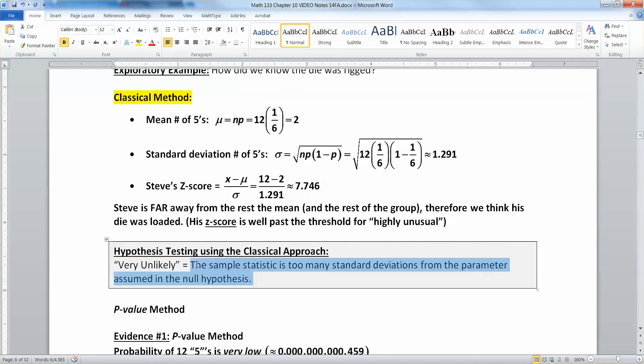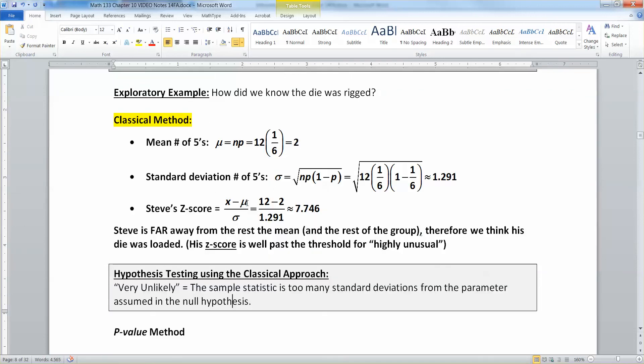Highly unusual, highly unlikely means that the sample statistic is too many standard deviations from the parameter assumed in the null hypothesis. In other words, Steve's statistic of 12 was too far away from the mean of 2 to happen by chance because his Z-score was 7.746, and that's really far away by random chance. So it's too many standard deviations—in other words, the Z-score or T-score is too high.